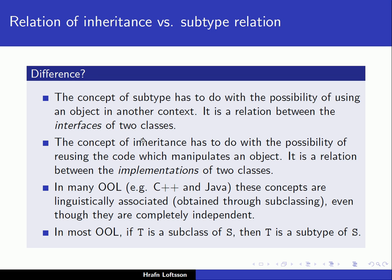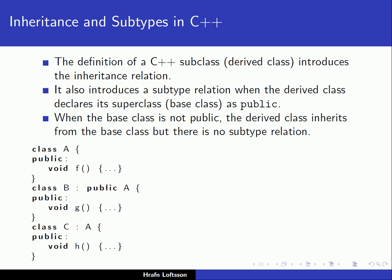However, in many object-oriented languages such as C++ and Java, these two concepts are linguistically associated — both obtained through subclassing — even though they are completely independent concepts. In most object-oriented languages, if T is a subclass of S, then T is a subtype of S, though this does not hold for every language in every case.